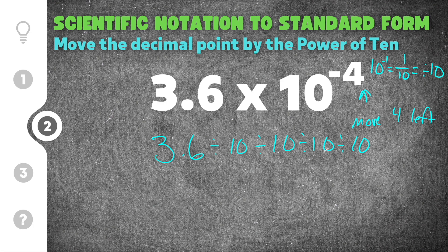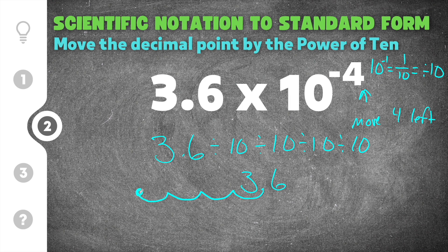When you divide by 10, the number obviously gets smaller. So 3.6 divided by 10 moves the decimal to the left one time, divided by 10 moves it left again, divided by 10 one more time, and the last division by 10 moves the decimal point to the left one final time. Every time we have a missing digit we add a zero as a placeholder.